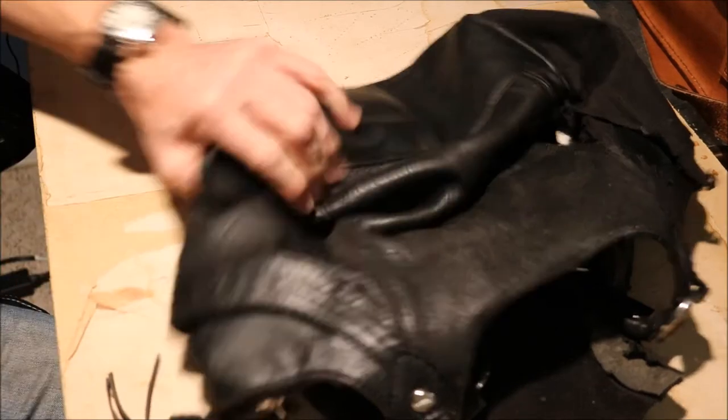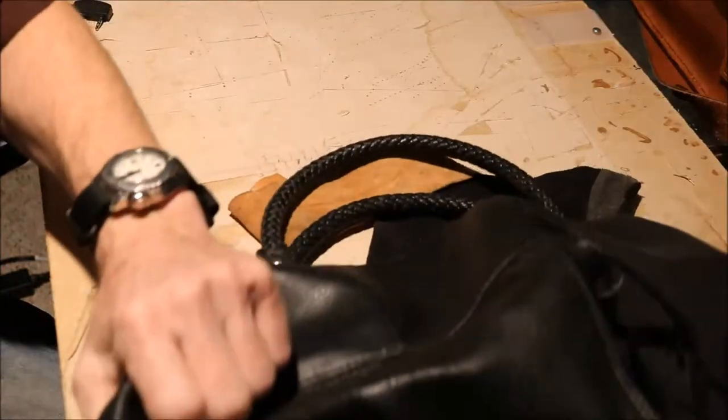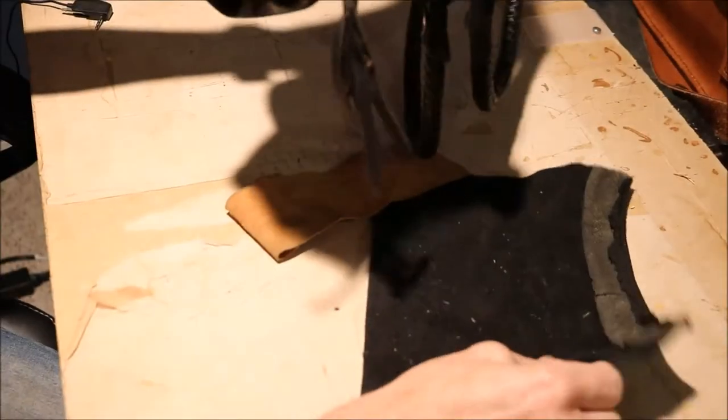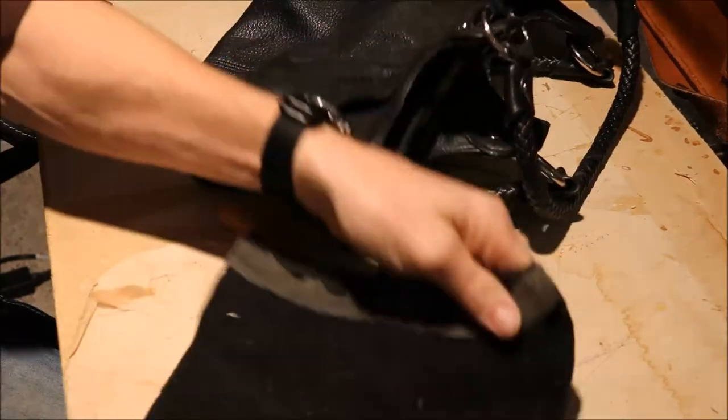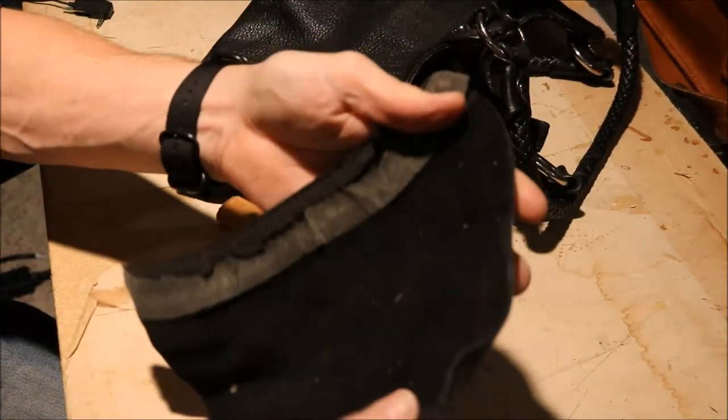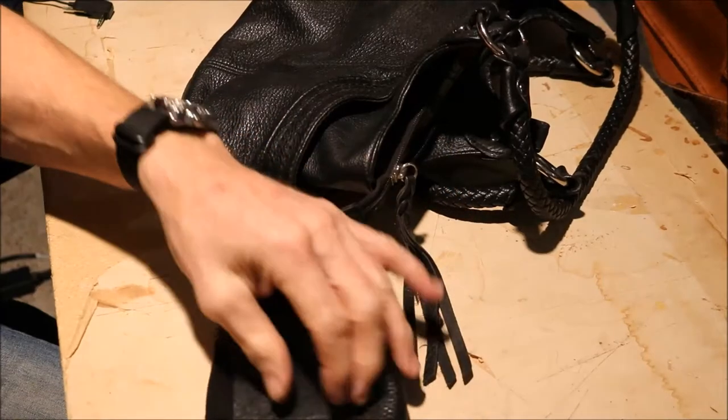Today's show we're going to make a watch roll of this old purse that my friend gave me. His wife didn't want it anymore. You can see I cut one side. It's nice and suede on the inside, so I won't have to line it. And we'll make a watch roll.